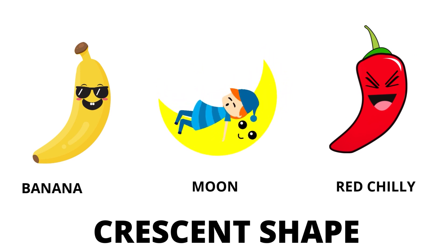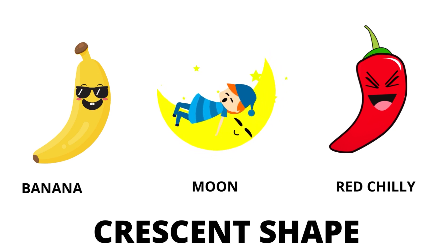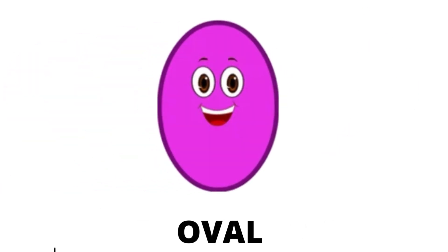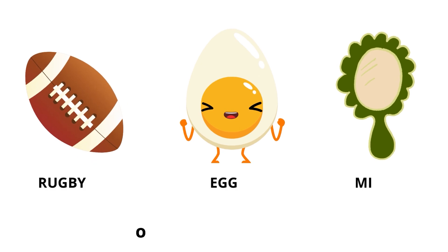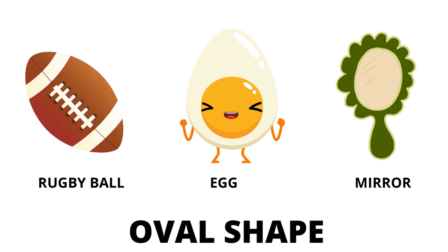Our next shape is oval. Oval has no sides. The real life examples of oval are rugby ball, egg, and mirror.